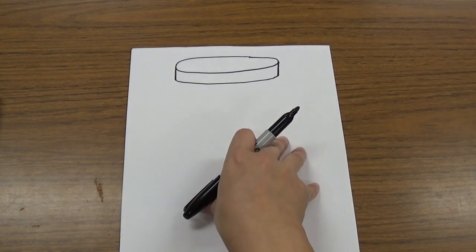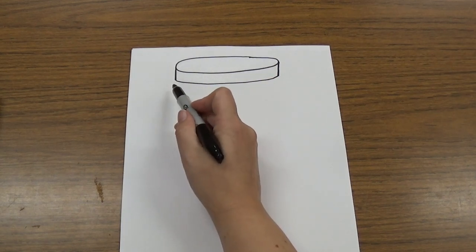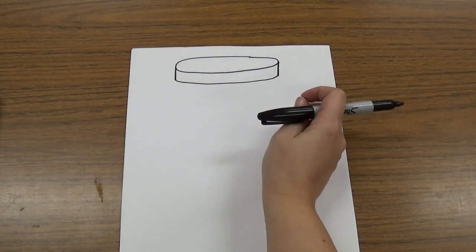So we have the lid of our jar. Next we're going to make the glass part of the jar.